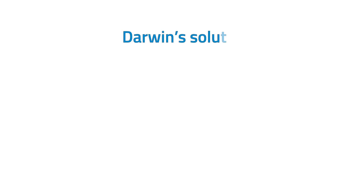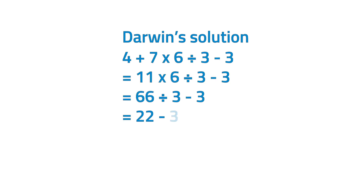Let's take a look at their solutions. First, let's see Darwin's solution. He started working from left to right. He solved 4 plus 7 first. 4 plus 7 is equal to 11. Then 11 times 6 is equal to 66. 66 divided by 3 is equal to 22. 22 minus 3 is equal to 19. Darwin's answer is 19.